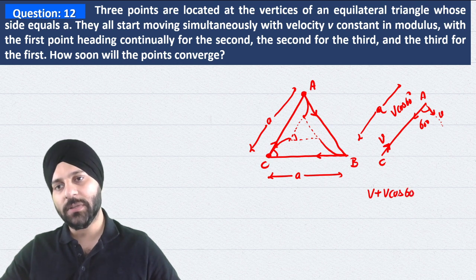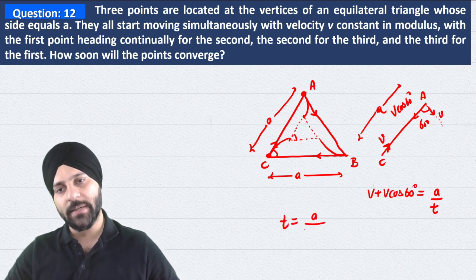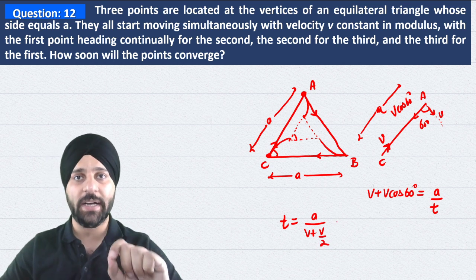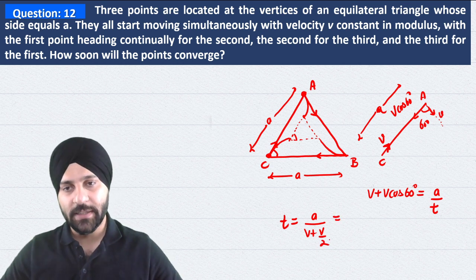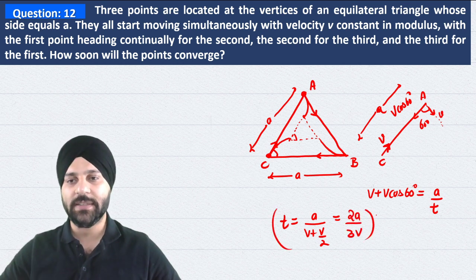Velocity equals distance upon time, and here relative velocities will add because both are moving toward each other. So v plus v cos 60 degree equals distance divided by time. If you calculate this time, it will be a divided by v plus v by 2, since v cos 60 is v by 2. So the answer will be 2a divided by 3v.